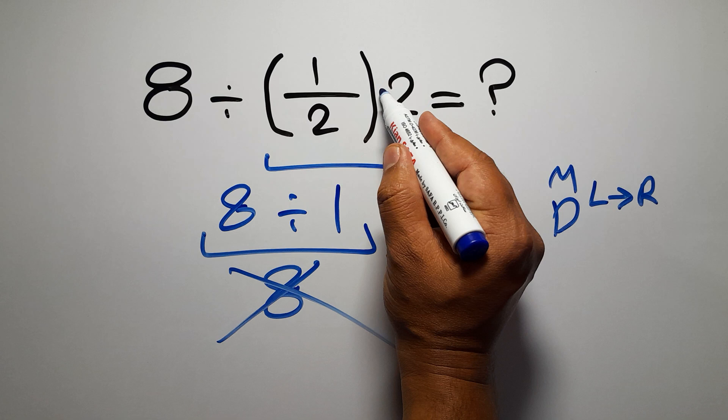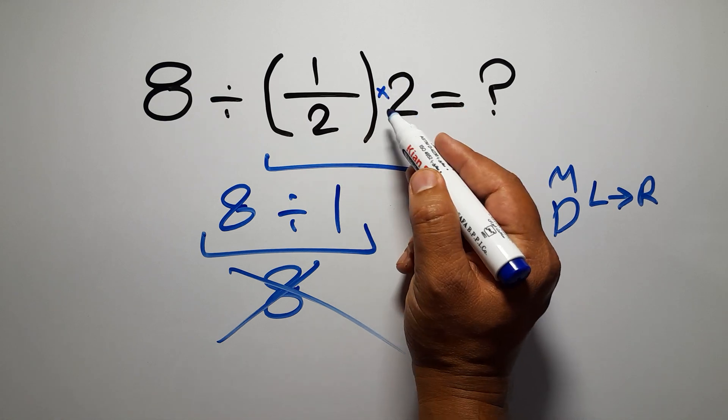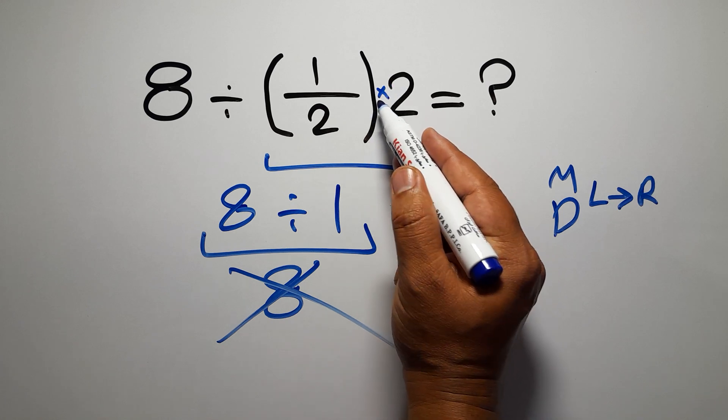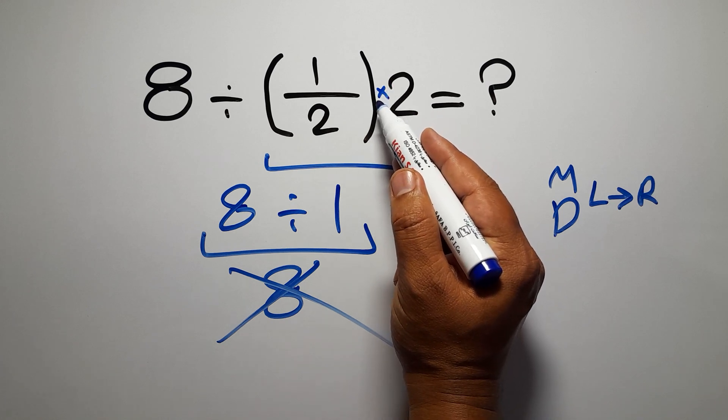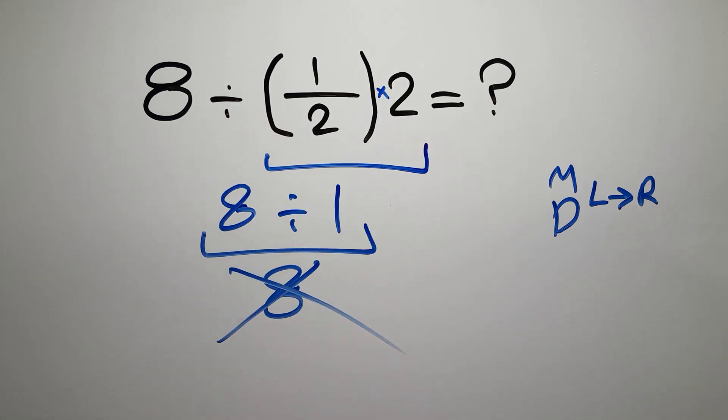We have here a multiplication, because in mathematics, when a number is placed next to parentheses, it means multiplication, and we usually don't write the multiplication sign for brevity. So first, we have to do this division, not this multiplication.